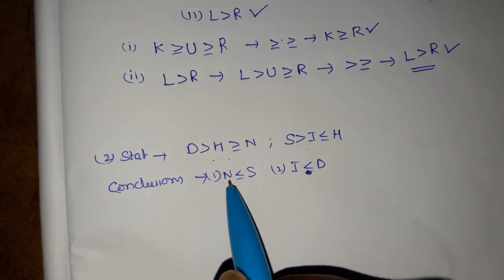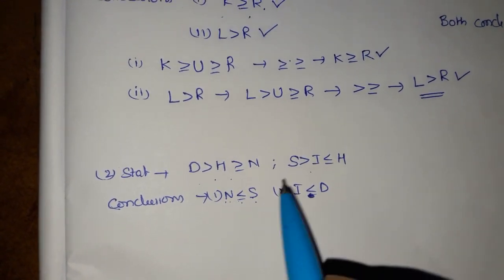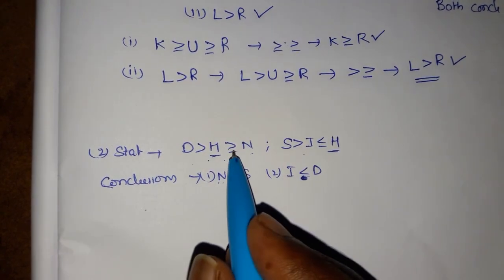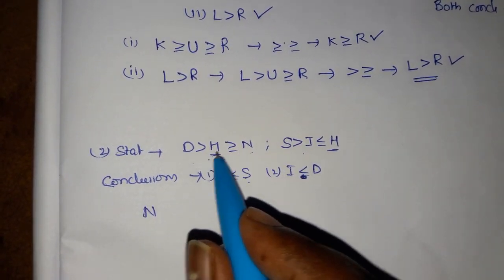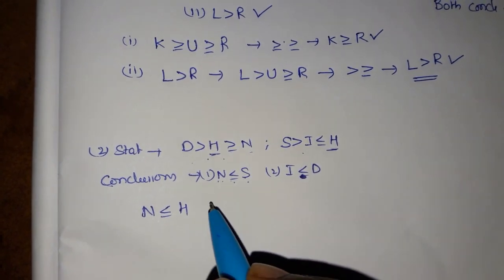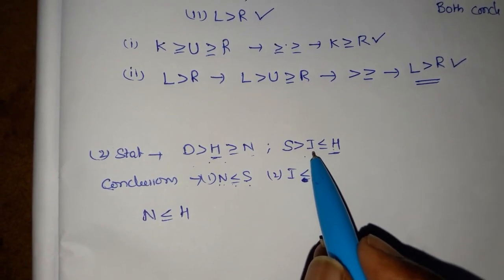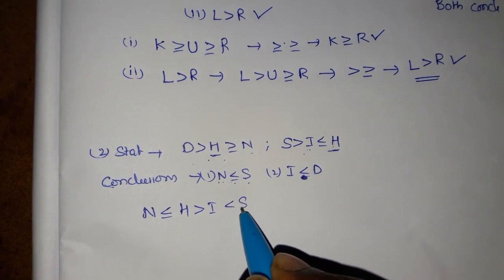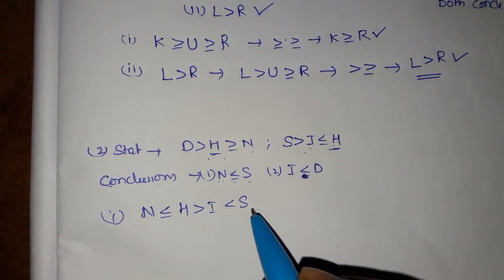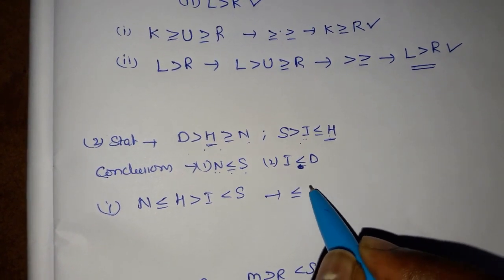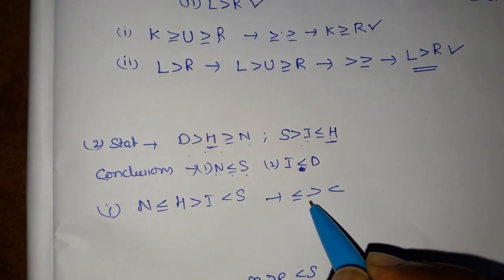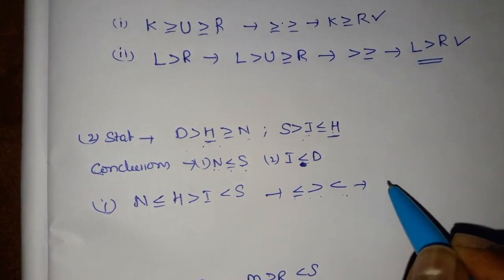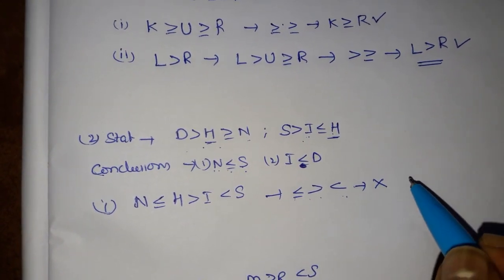What I am going to do: first, n less than or equal to s — take the common element. The common element in both is h. So we check n to h. Here greater than and less than are reverse, so n to h — the symbols are opposite. From h to i: greater than i, so less than s. The symbols are opposite — they are not in sequence, so this conclusion does not follow.